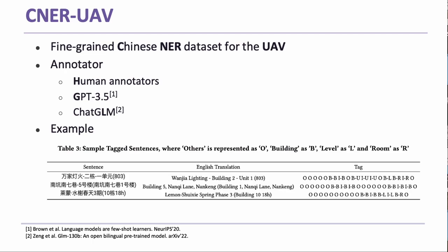To answer this question, in this paper we present CNER-UAV, which is a fine-grained Chinese dataset for the UAV delivery task. Specifically, this dataset consists of five categories ranging from buildings to rooms, allowing for fine-grained segmentation of Chinese addresses. The dataset contains about 12,000 labeled samples, and the raw data was collected from the Meituan UAV delivery system, representing the actual data distribution.